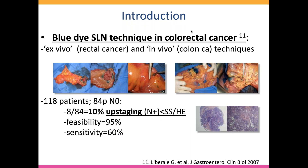There are a lot of reports from the 90s and beginning of 2000 by many teams. The technique used at that time was the blue dye technique. You can use it by peritumoral injection or submucosal injection. Here are the results of one of the studies we published more than 10 years ago, including more than 100 patients, 84 of whom were N0. When analyzing the sentinel lymph node with serial section and hematoxylin eosin staining, we were able to upstage 10% of patients.